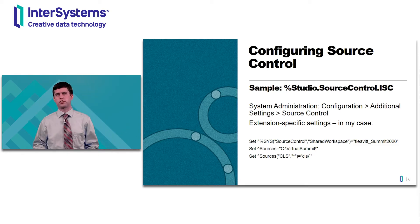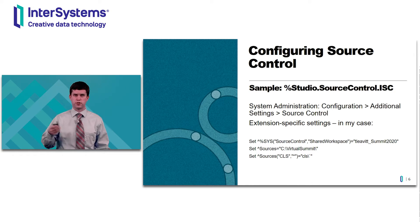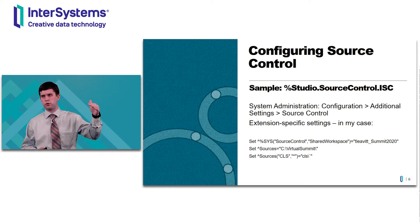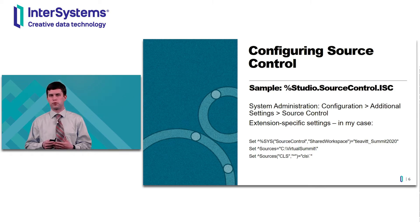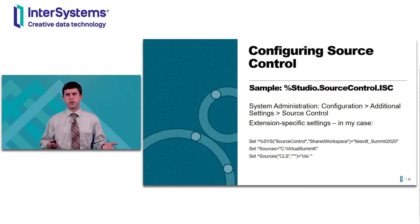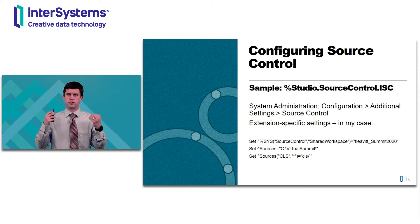We'll start with a discussion and demo of how to configure source control, using as an example the class %studio.sourcecontrol.isc, which is what we use for our own internal development processes at InterSystems in application services, health share development, database platforms, etc. The first step is going to the management portal, System Administration, Configuration, Additional Settings, and then to Source Control through those menus. You pick your namespace of interest and select the source control class you want to use — the extension that will be enabled for editor events in that namespace.